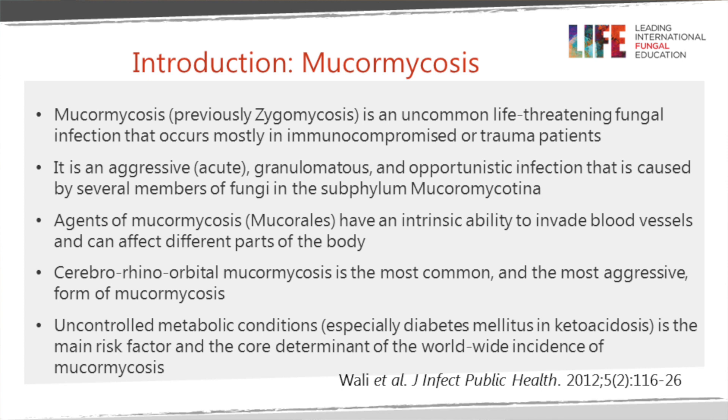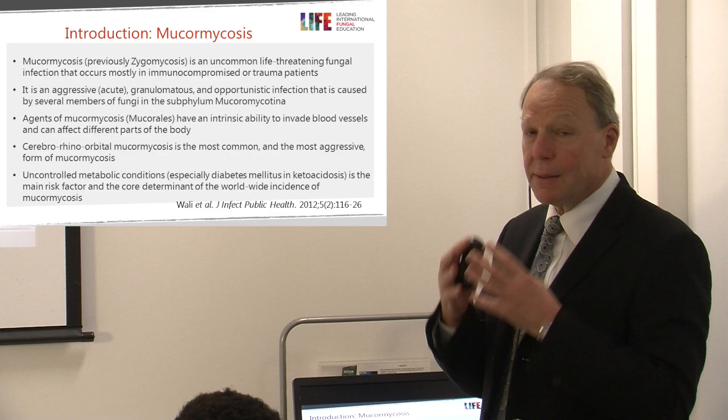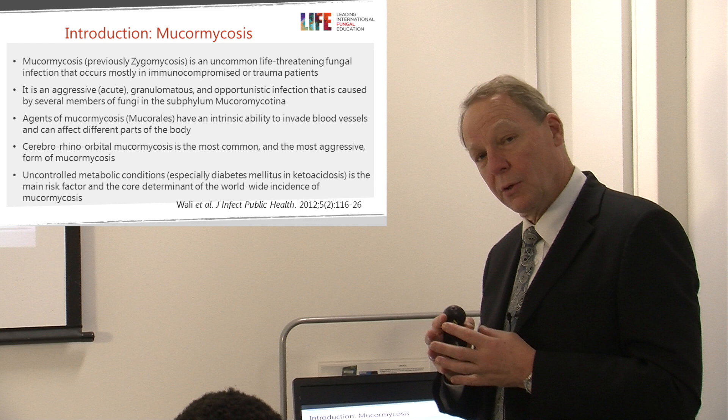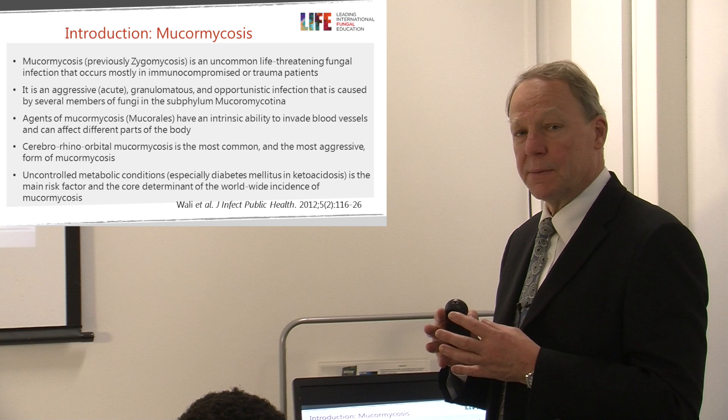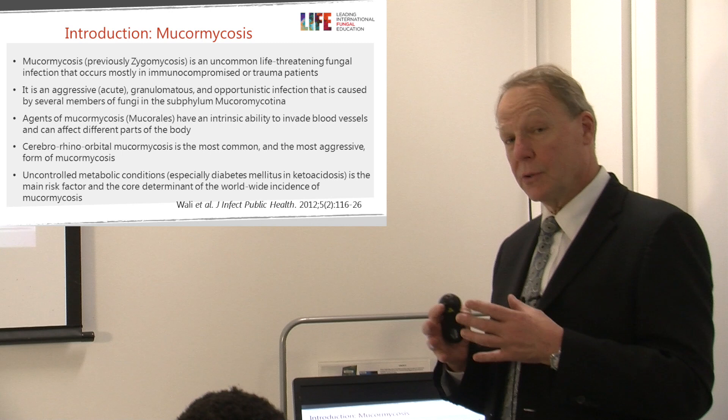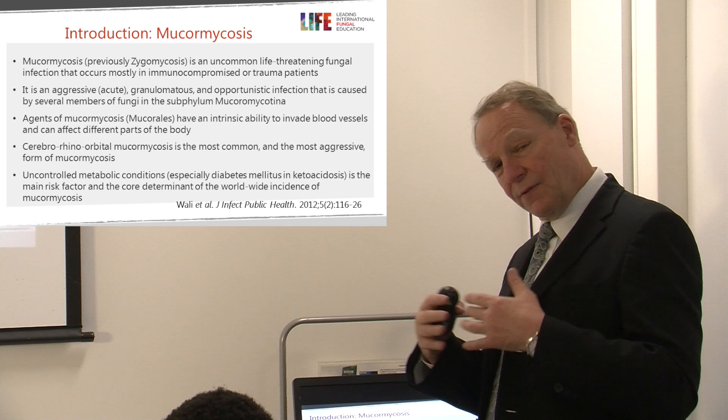Different parts of the body are affected in different patient groups. The most common is involvement of the sinuses leading to cerebral or oral extension, sometimes with eye or retroorbital involvement. A key underlying characteristic is diabetes, particularly those with ketoacidosis, though it's usually poorly controlled diabetics who may become ketotic during the disease process.